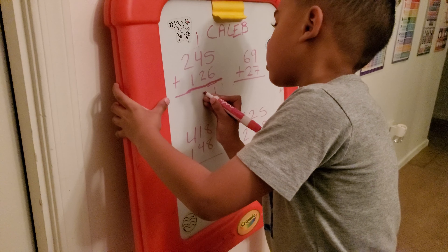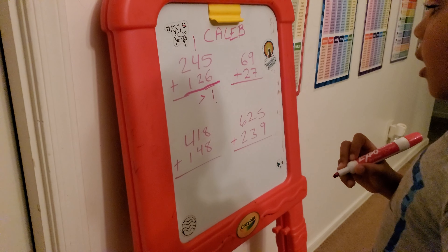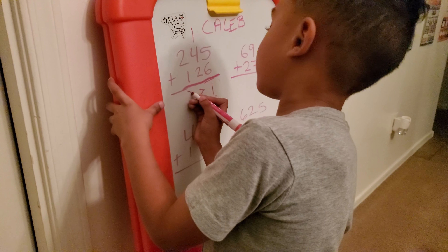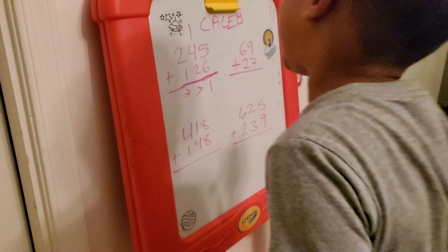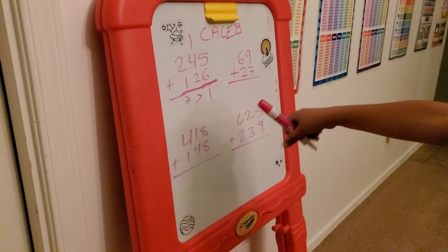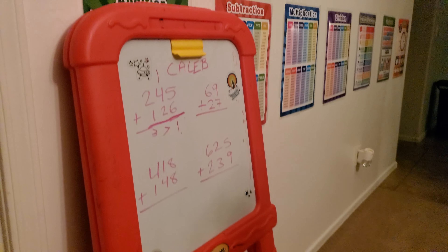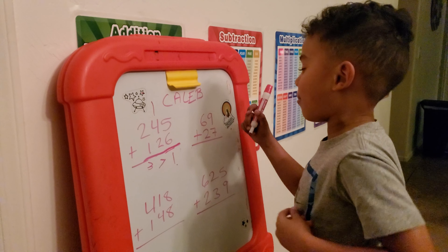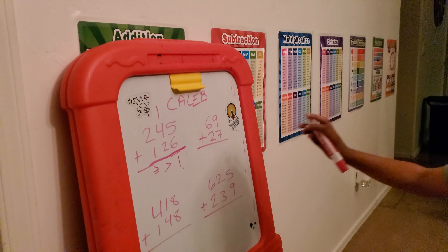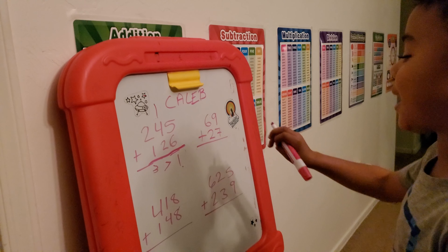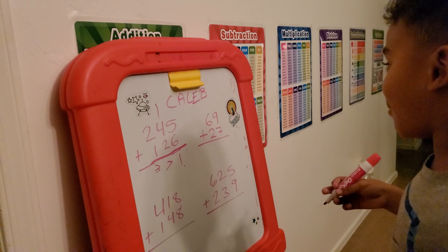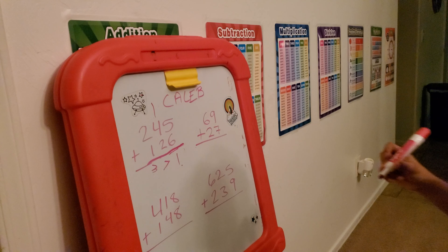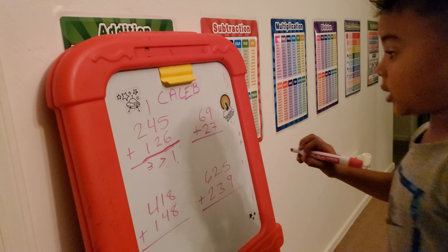So first, you put a 1 at the bottom, which is the end number, and then you put a 1 above the 4, and then you put 1 plus 4 is 5, and then you put a 7, and then 2 plus 1, you put a 3, and then it's 371.